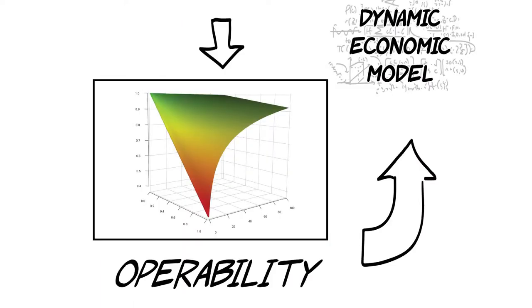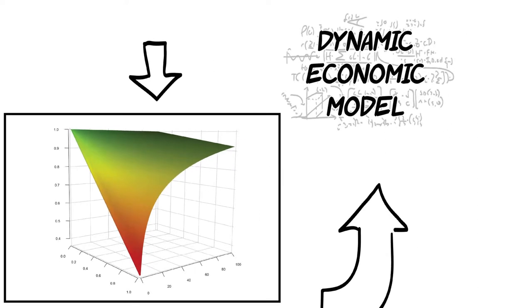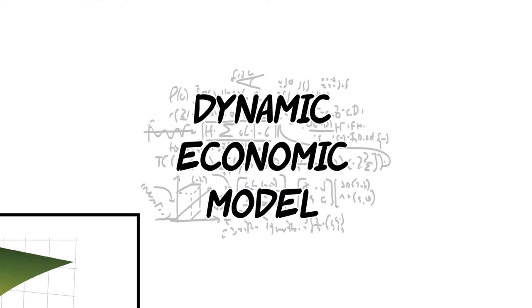This disruption data is then used to estimate the ability of industries to continue operating, from the initial onset of disruption through to return to full production. The operability functions link to the economic model as an adjustment factor.